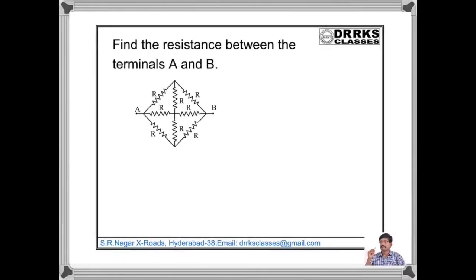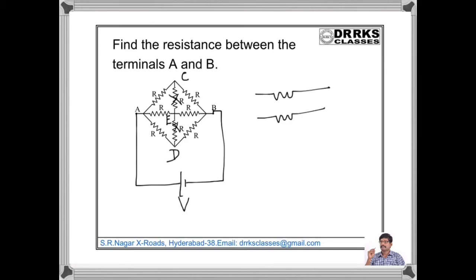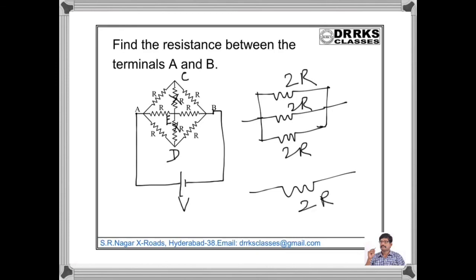Let us find out the effective resistance between A and B. Here, the points C, D, and E are at the same potential. If we connect a voltage V between A and B, the potential divides equally, so the potential at C equals the potential at E and the potential at D. No current is flowing through this R or through this R. So the effective circuit has 2R, 2R, and 2R connected in parallel between A and B. The effective resistance between A and B is 2R by 3.